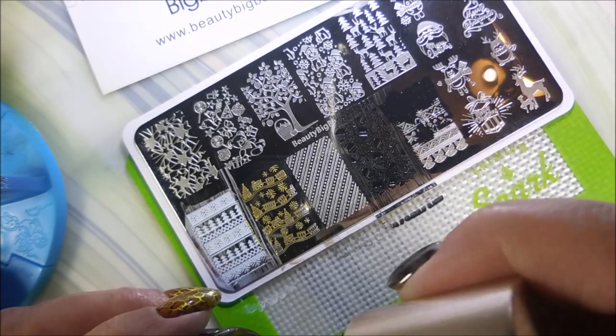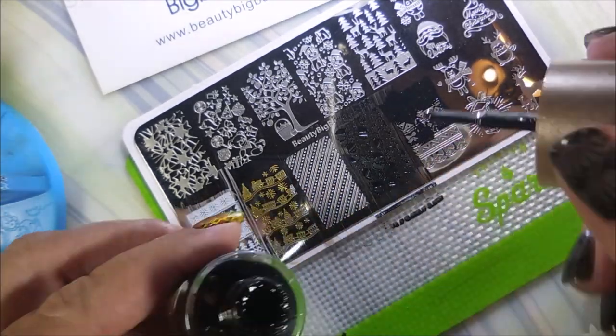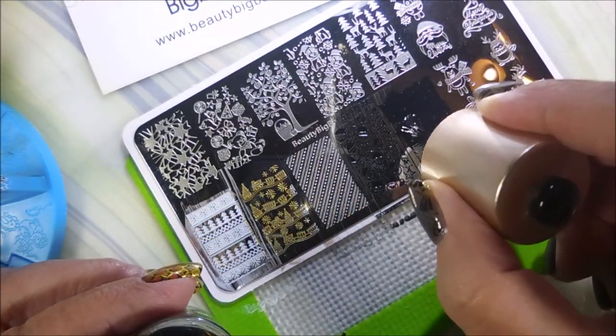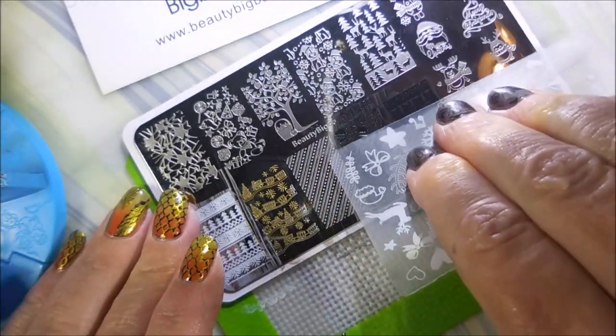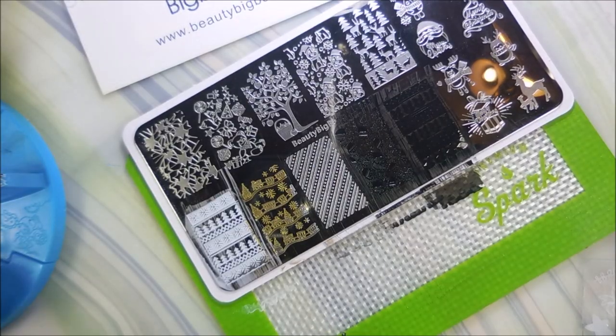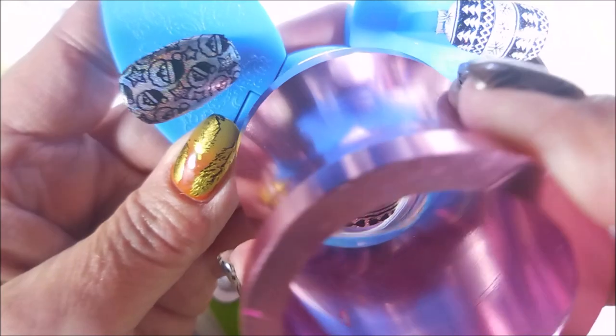Getting a little low on this black stamping polish. We might have to break out a different one. We'll see. Let's see if we can get through it. I do want to use all of it up though. There we go. Kerplunk.